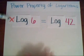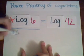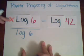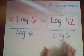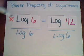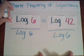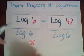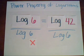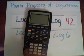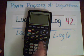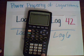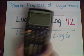In order to get x by itself, we divide by log 6 on both sides, which cancels out log 6 over log 6, leaving us with x equals log 42 over log 6. If we put that into our calculator — log 42 divided by log 6 — we get 2.09.